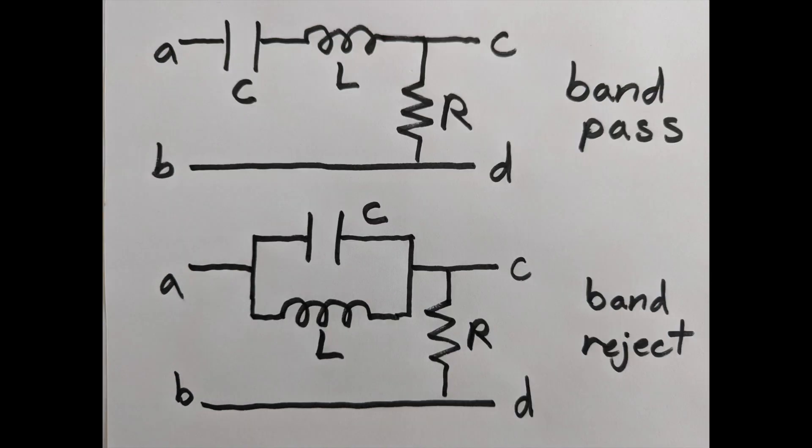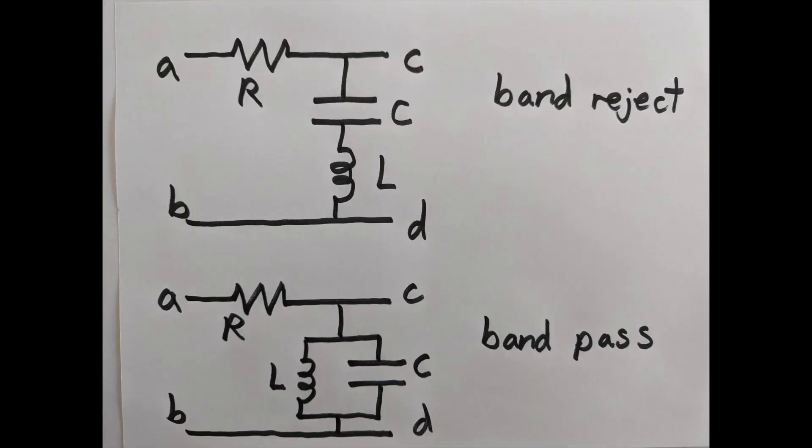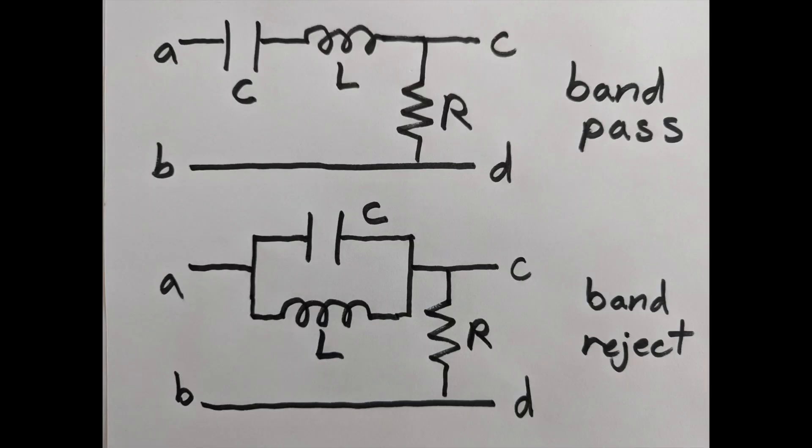Next up, we use both a capacitor and an inductor together. We can put them in series or in parallel, and we can put them up high or down low. At extreme frequencies, either very high or very low, if you put the LC in series, you will always have a gap. If you put them in parallel, you will always have a wire. It's the intermediate frequencies that will have different behavior.